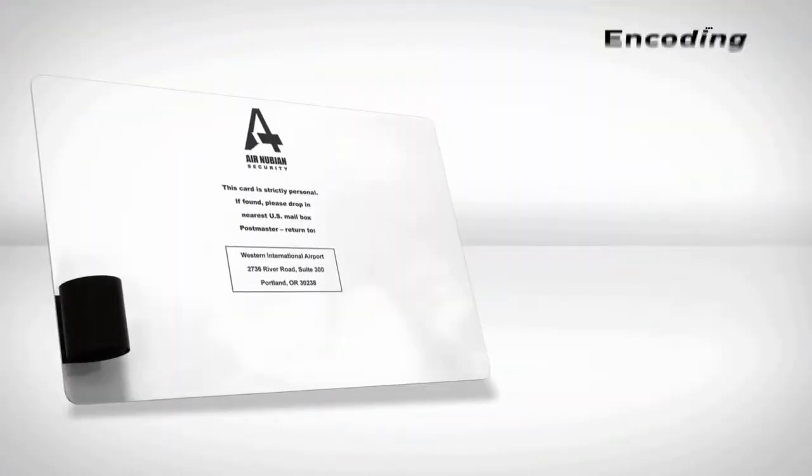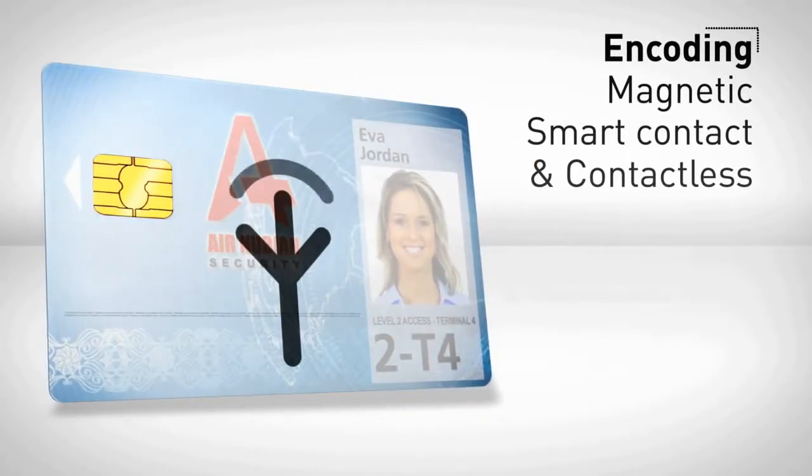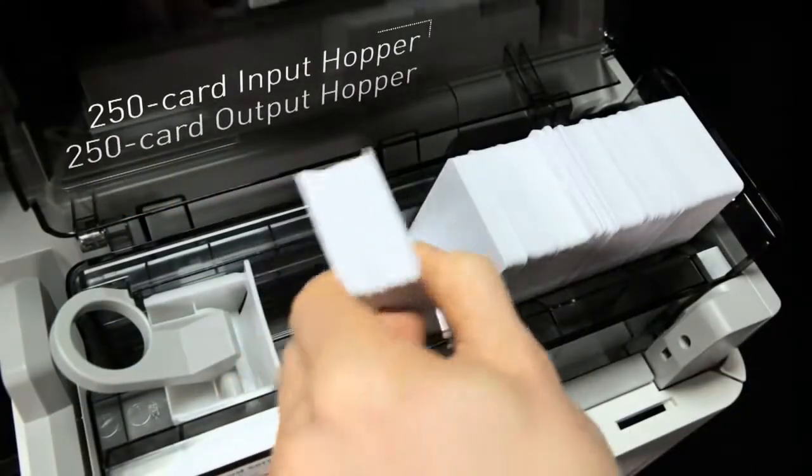To meet your specific needs, Avancia offers a full range of encoding options which can be combined in a same printer: magnetic stripes, as well as smart contact and contactless.